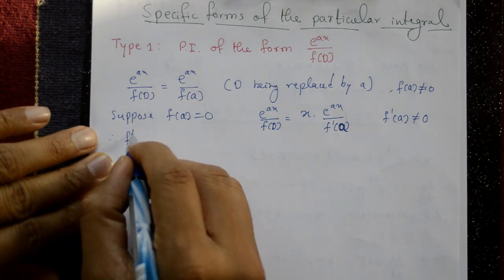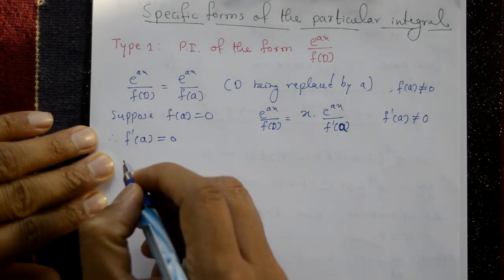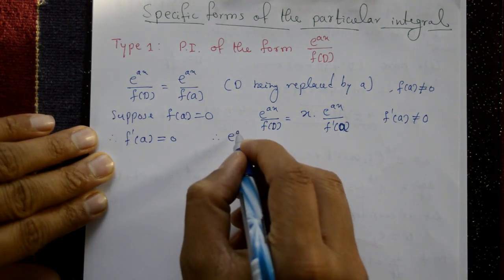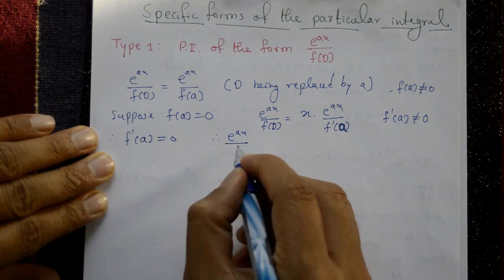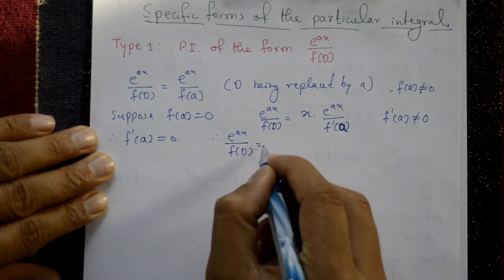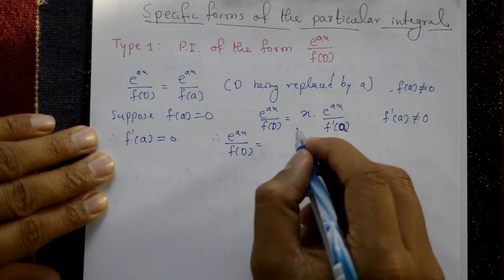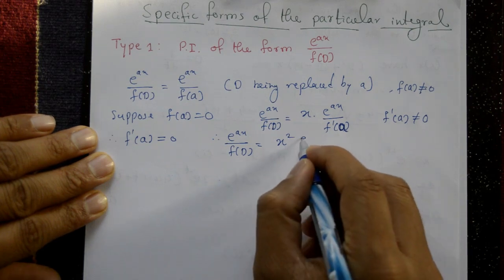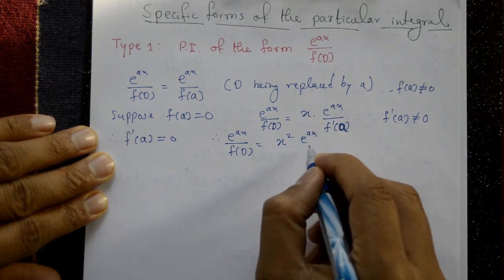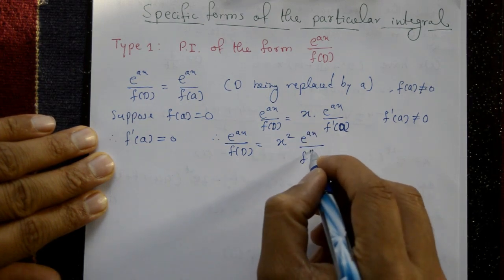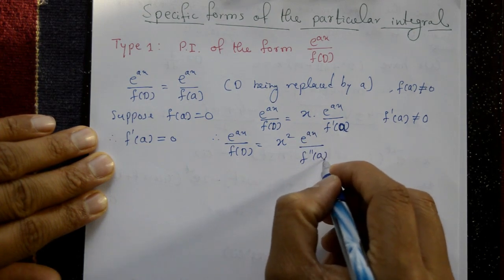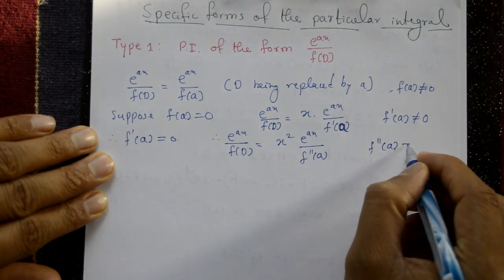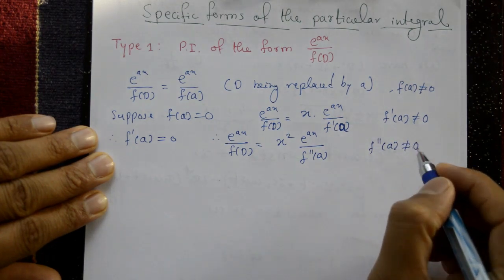If f'(a) also equals 0, then again multiply by x: giving x² · e^(ax) / f''(D), and evaluate as x² · e^(ax) / f''(a), provided f''(a) is not equal to 0. This process continues as needed.